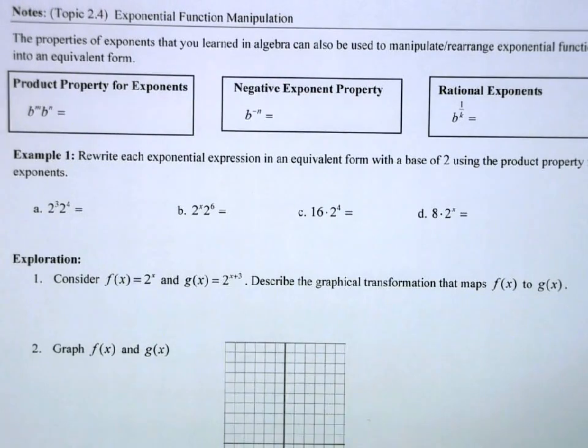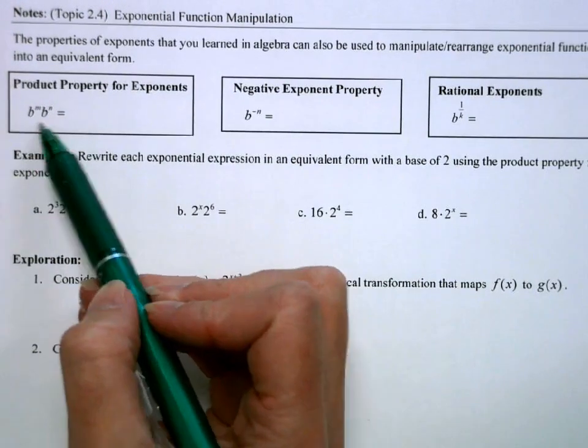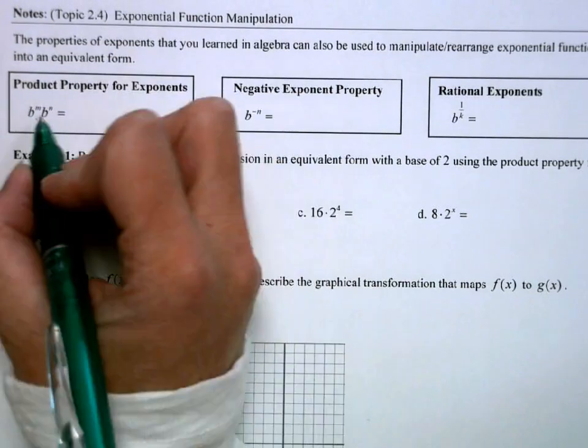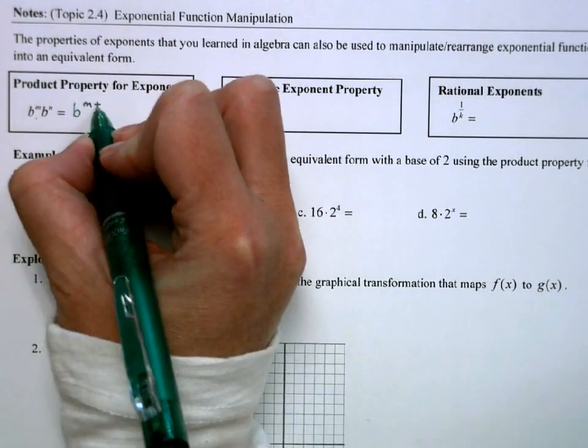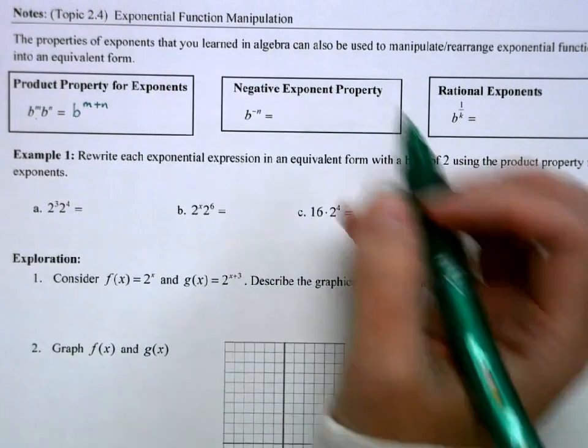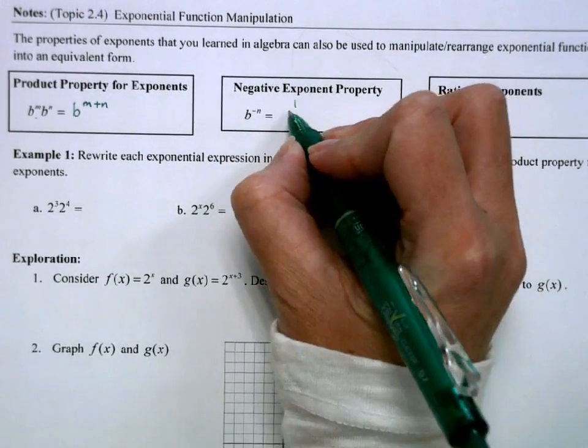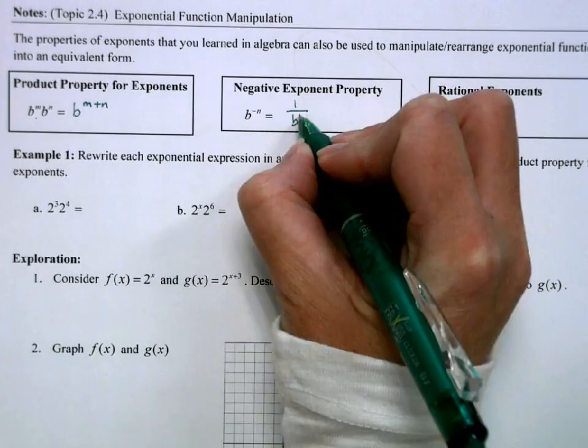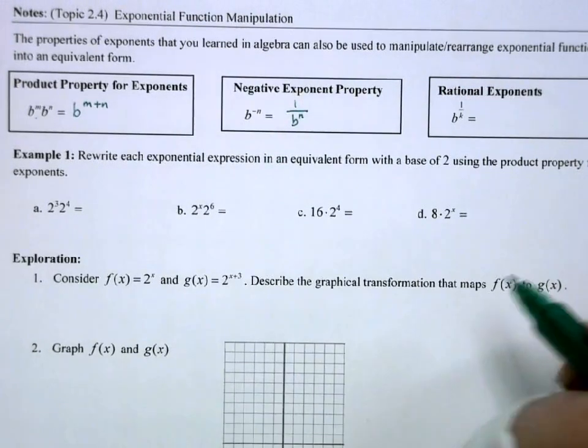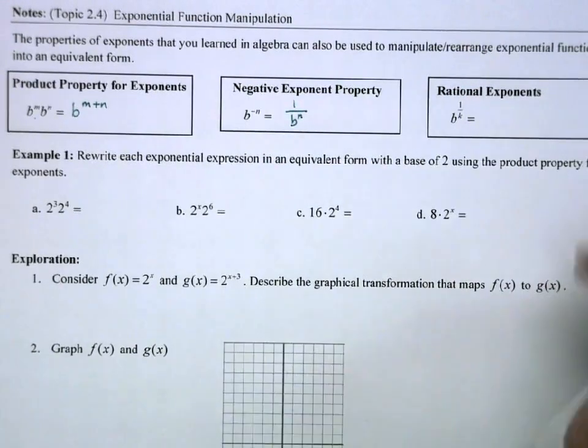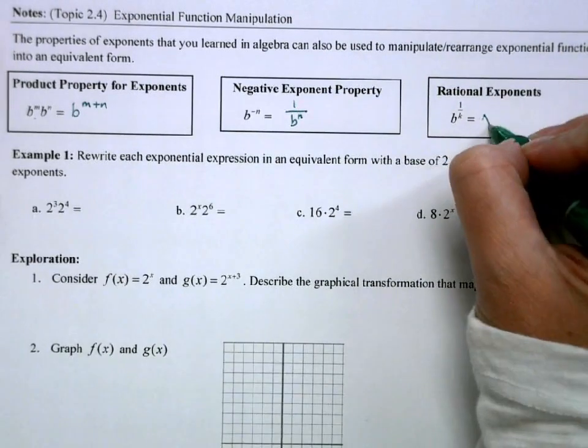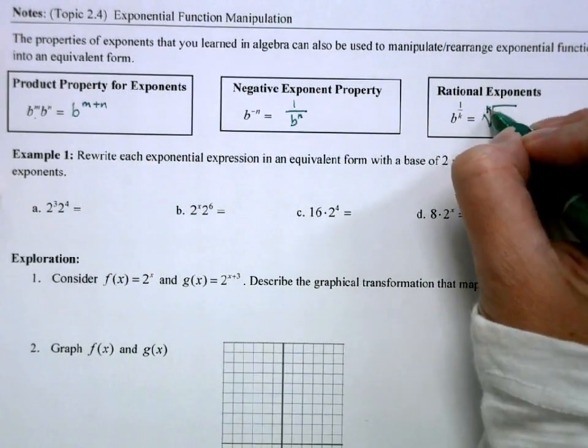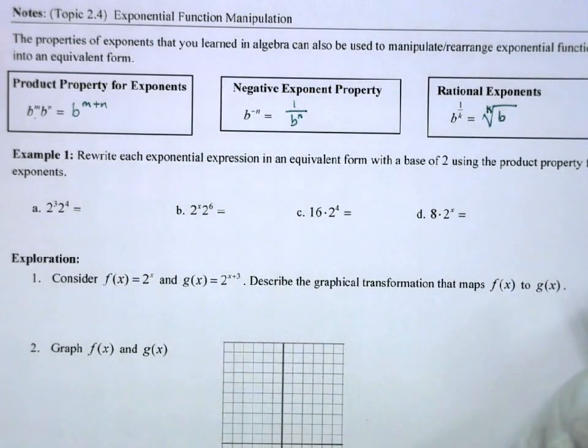Let's review some properties. The product property for exponents: b to the m times b to the n is b to the m plus n. If we have a negative exponent, that takes our base and puts it in the denominator of a fraction. And then if you have a rational exponent, that is equivalent to a root. So this would be the kth root of b.